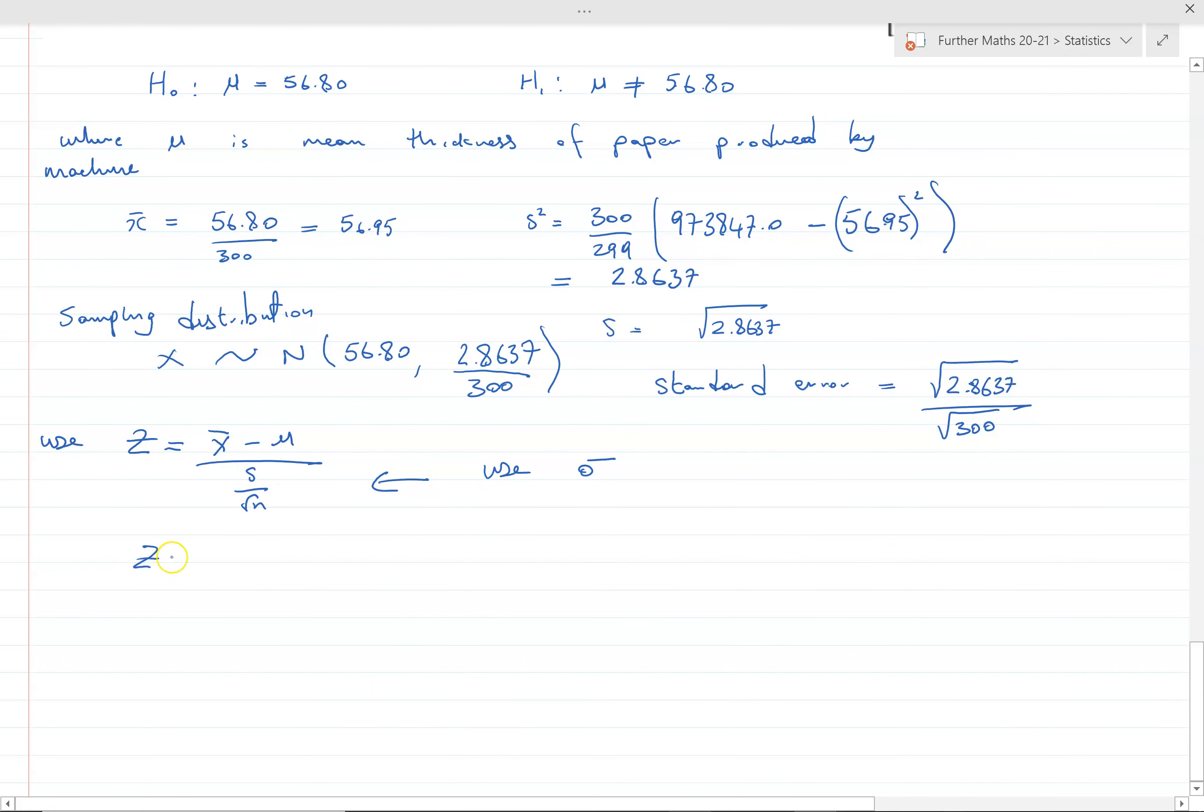Our value of x̄ was 56.95 take away 56.80, which is our presumed mean under the null hypothesis, divided by our standard error, which is 2.8637 over 300. That comes to 1.535.